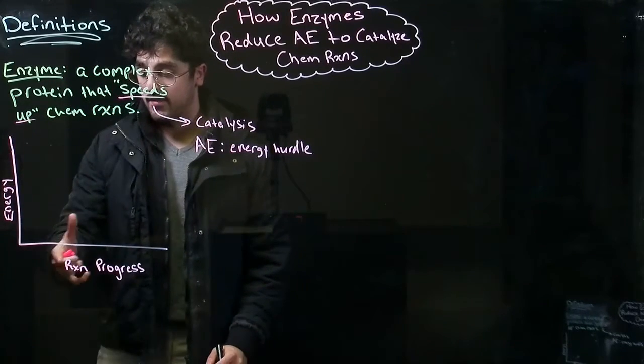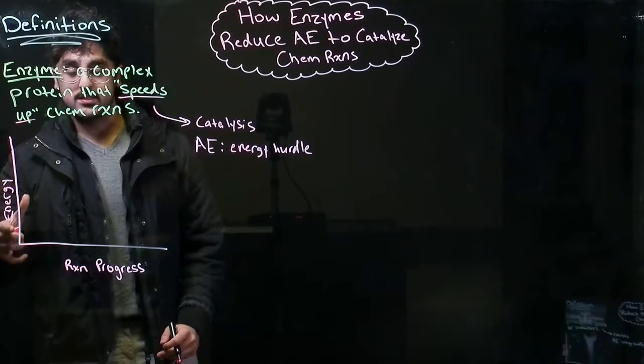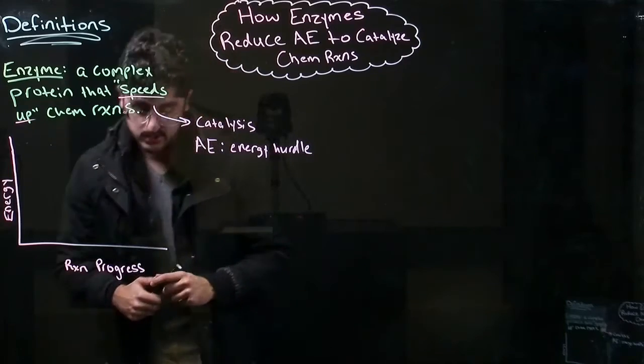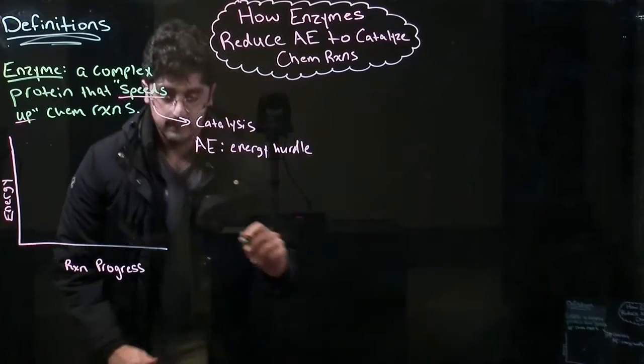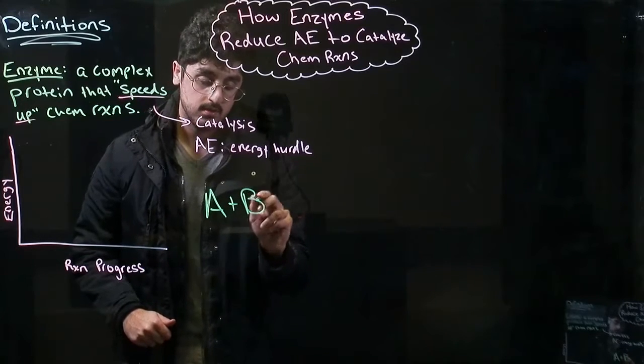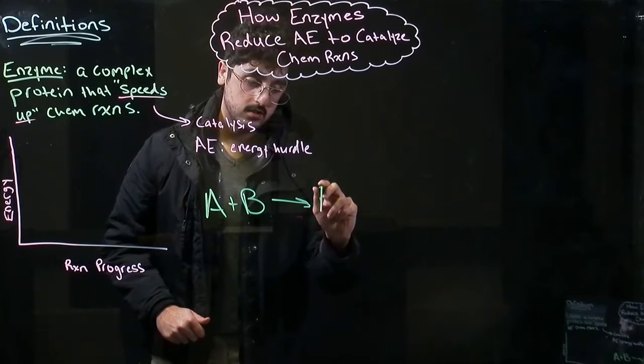So here's an example on a graph. So we have energy on the y-axis and reaction progress on the x. So if we look at a simple chemical reaction, A plus B yields AB.